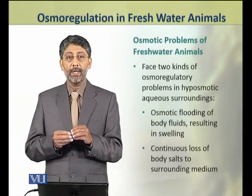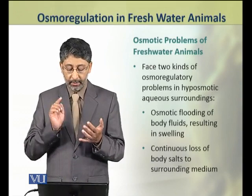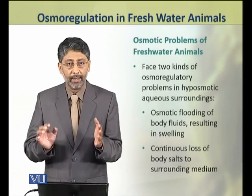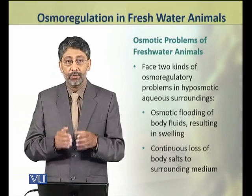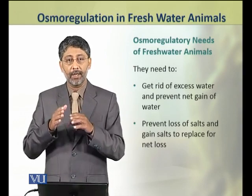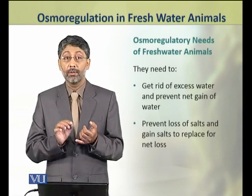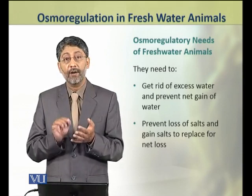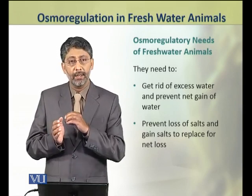In this hypotonic environment, freshwater animals face two types of osmoregulatory problems: the osmotic flooding of their body fluids, which results in swelling, and the continuous loss of salts into the surrounding dilute medium. In order to maintain the osmolarity of their body fluids, they need to get rid of excess water, prevent net gain of water, prevent loss of salts, and gain salts to replace the net salt loss.